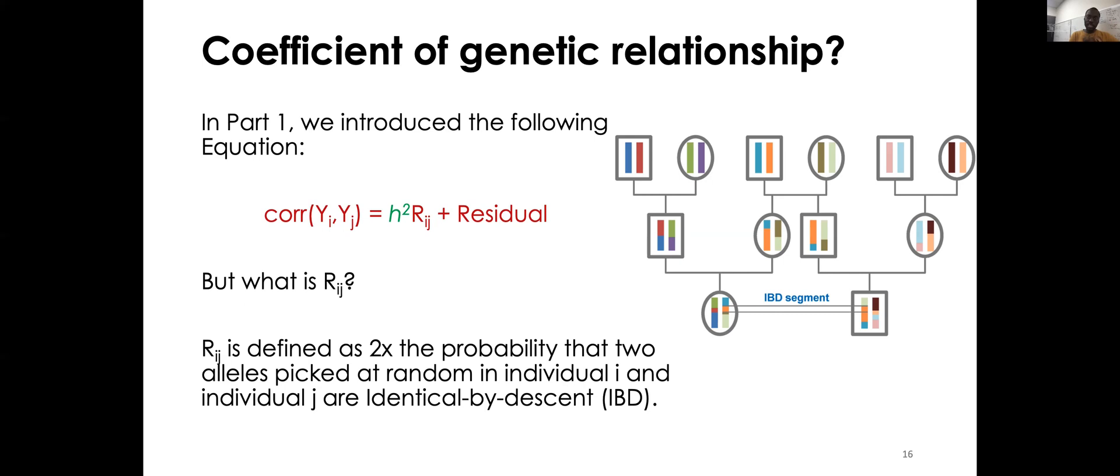So what does it mean by identical by descent? It's not just that they are similar. Identical by descent means that they're not only similar, but they can also be traced back to a single common ancestor. So this is a picture that I picked up on Wikipedia. And so if you look here in this pedigree, they've highlighted this small orange segment, which is identical between that individual and that individual. But more than that, if we trace back in the pedigree, we can see that this orange segment comes from one of their grandparents here. So again, this R_j is defined as two times the probability that two alleles picked up at random in individual I and individual J are identical by descent. So that gives us the formal definition of the coefficient of relationship.